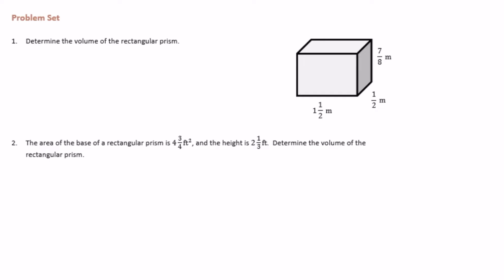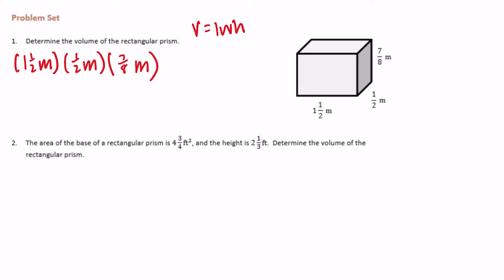Sixth grade module 5 lesson 12 problem set number one: determine the volume of the rectangular prism. Volume is equal to length times width times height, so we'd have one and a half by a half by seven eighths — one and a half meters by half meter by seven eighths meters. Let's multiply all of those together. I'm going to make one and a half into an improper fraction.